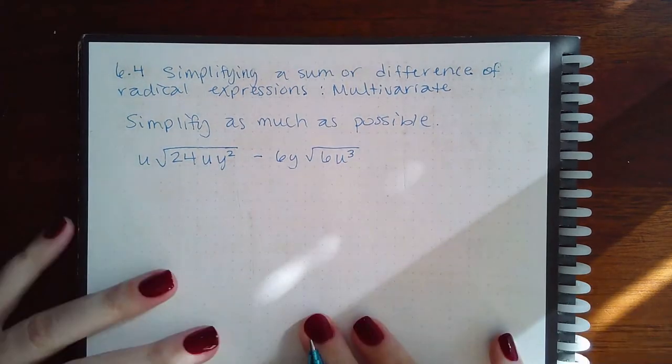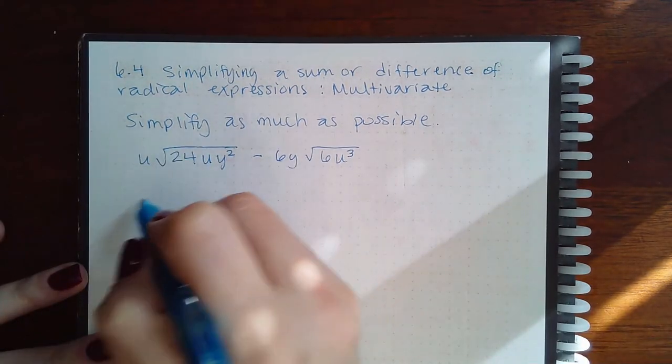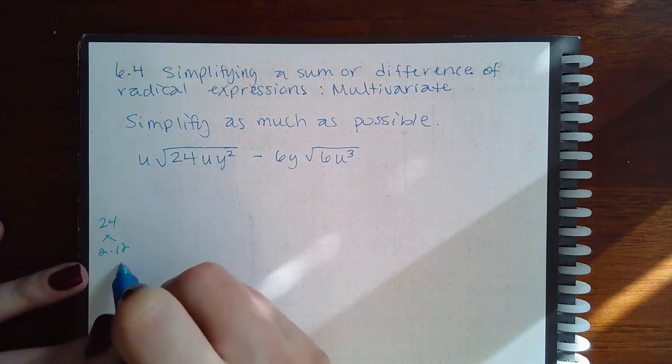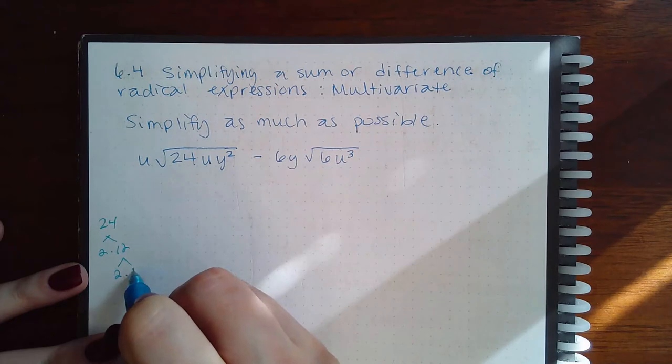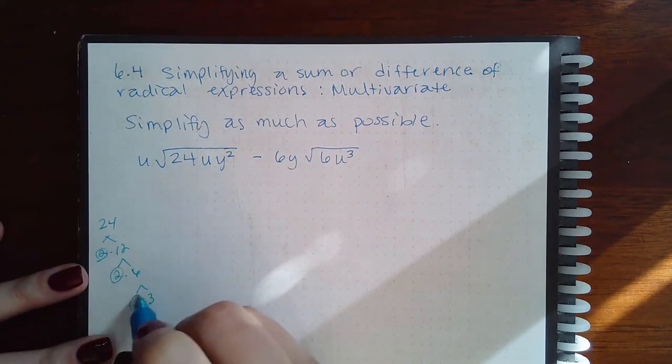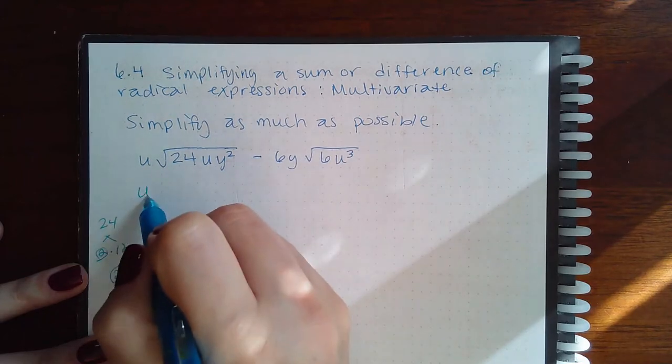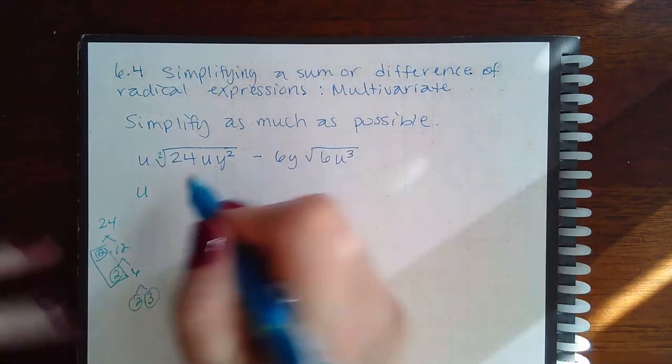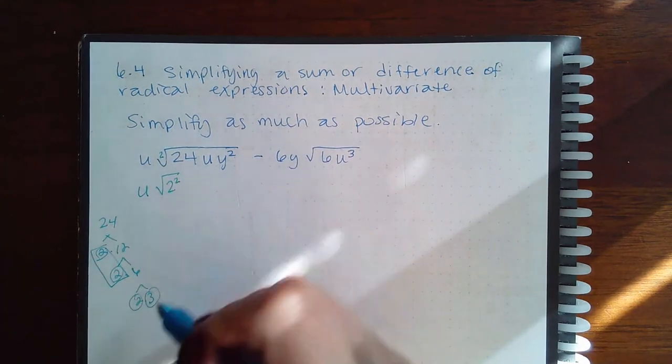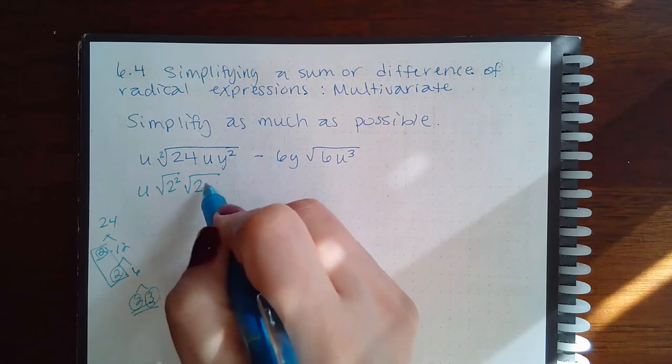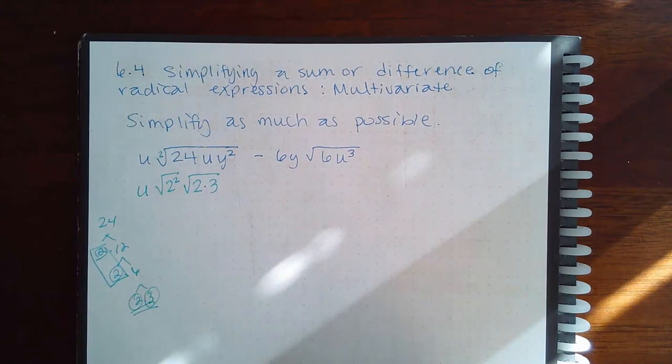We have u's and y's but it still all works the same. So I'm going to do the 24 - that's 2 times 12, 2 times 6, 2 times 3. These are all primes and I'm going to keep my u there. And then because it's a square root I need a pair, so there's my pair of twos, and then these don't have a pair so I'm just going to put both of them together in their own separate square root.